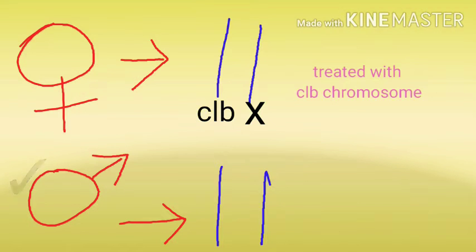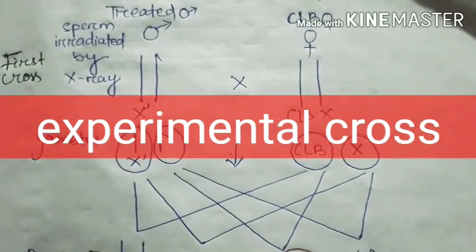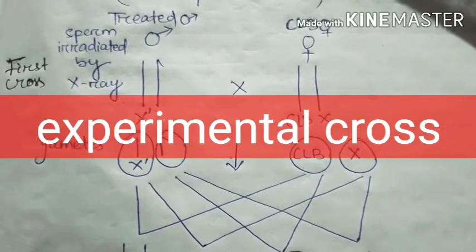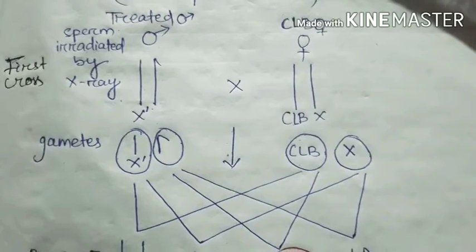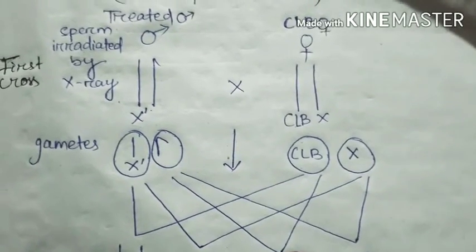So he took male Drosophila for his experiment by treating them with X-ray, because he has to prove induced mutation. In male, you can see they have the X dash chromosome, which means the X-ray treated chromosome and a Y chromosome. This is the cross through which Muller proved his experiment.